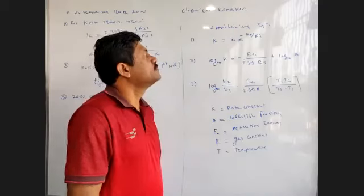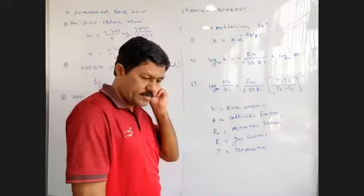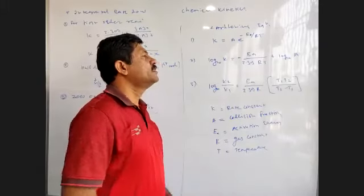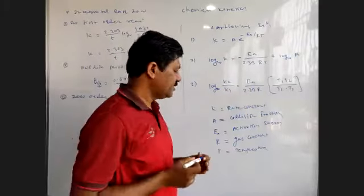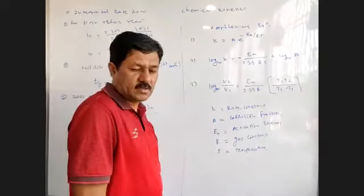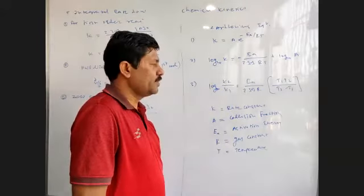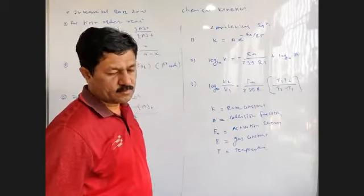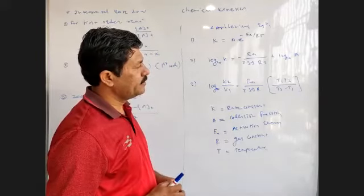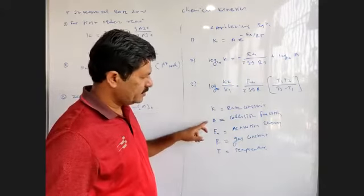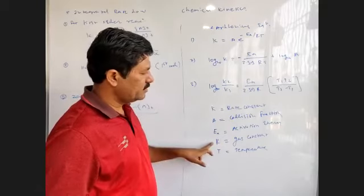Student Aniket recites: K = A·e^(−Eₐ/RT). Second: log K = −Eₐ/(2.303RT) + log A. Third: log(K₂/K₁) = Eₐ/2.303R × [T₁T₂/(T₂−T₁)]. Where A = collision fraction, Eₐ = activation energy, R = gas constant, and T = temperature.